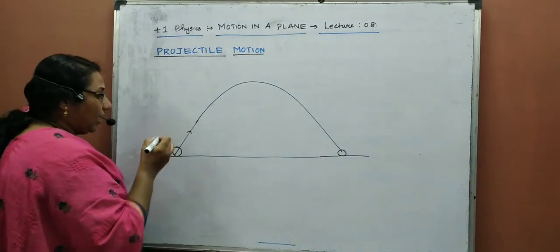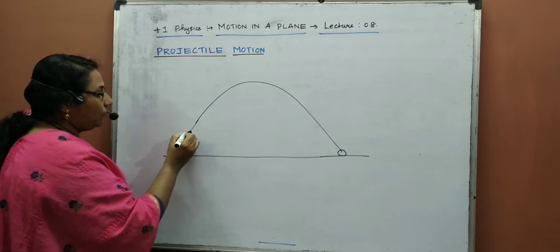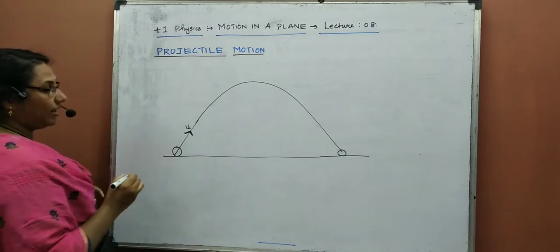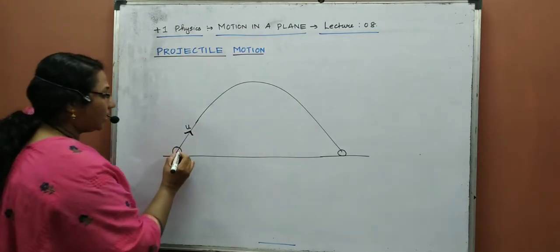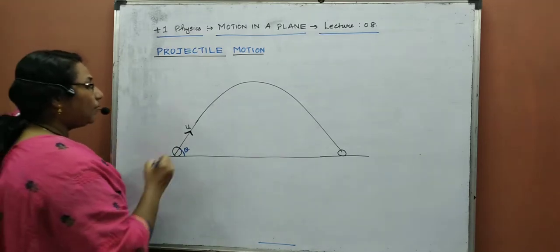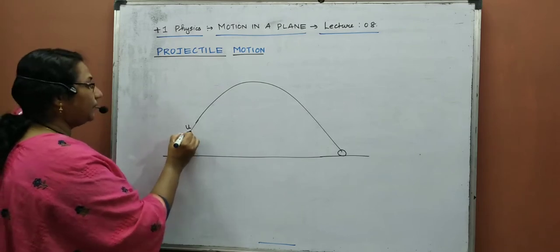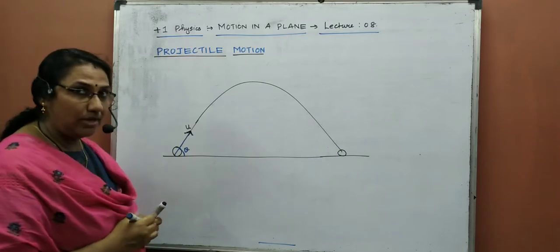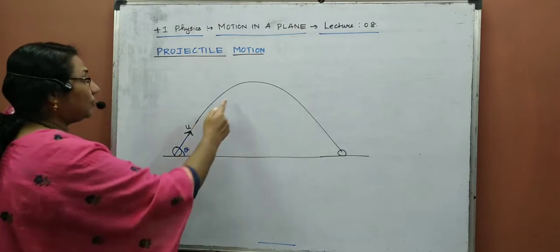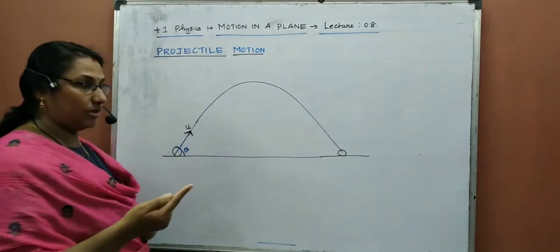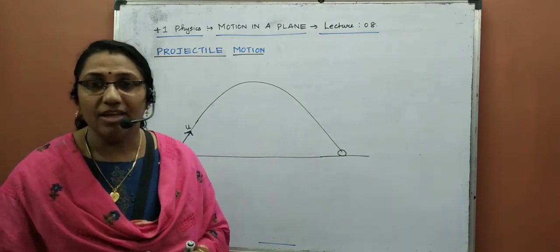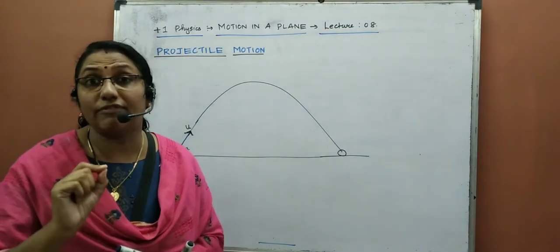A ball on the ground is provided an initial velocity u, by making an angle theta to the ground. After kicking — that is, providing the initial velocity — the ball moves upward. But after some time, it moves downward. Why? Because of the effect of gravity.